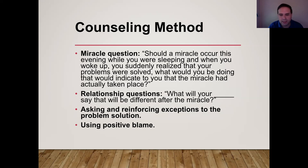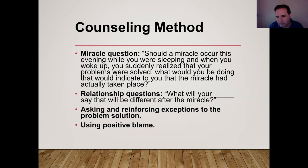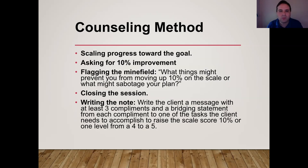We use positive blame — when somebody does something really good, you blame them for it. At AA, someone might say 'it's God and the program,' and I'll say 'yeah, but you had to show up and get on your knees — that was you; that's your fault you got better.' Scaling isn't just about feelings but progress toward the goal. If somebody has a goal of going back to college and there are ten steps, you can scale them: once the application and financial aid are filed, you're at three. Asking what a 10% improvement would look like is always great.